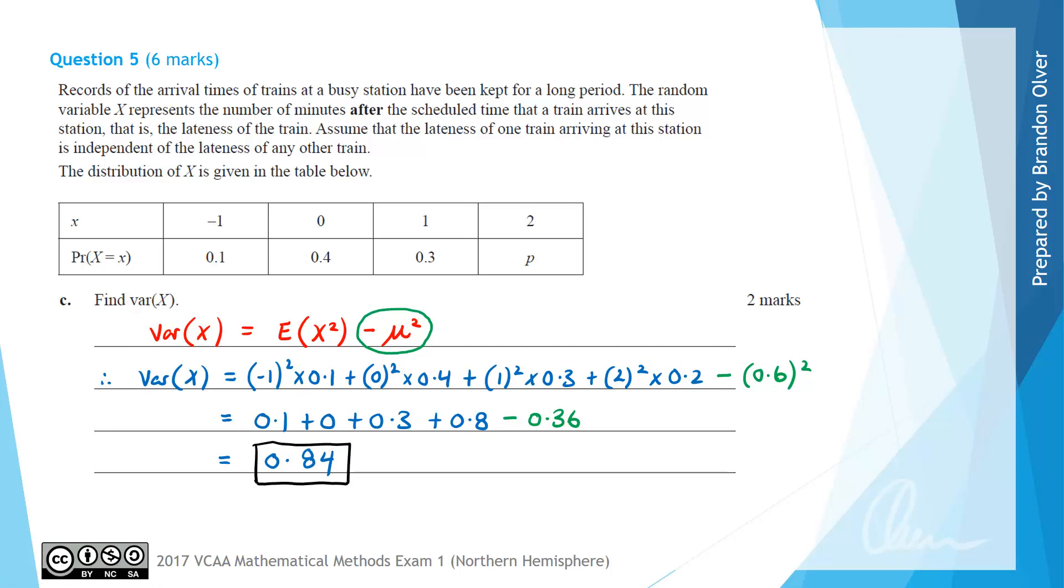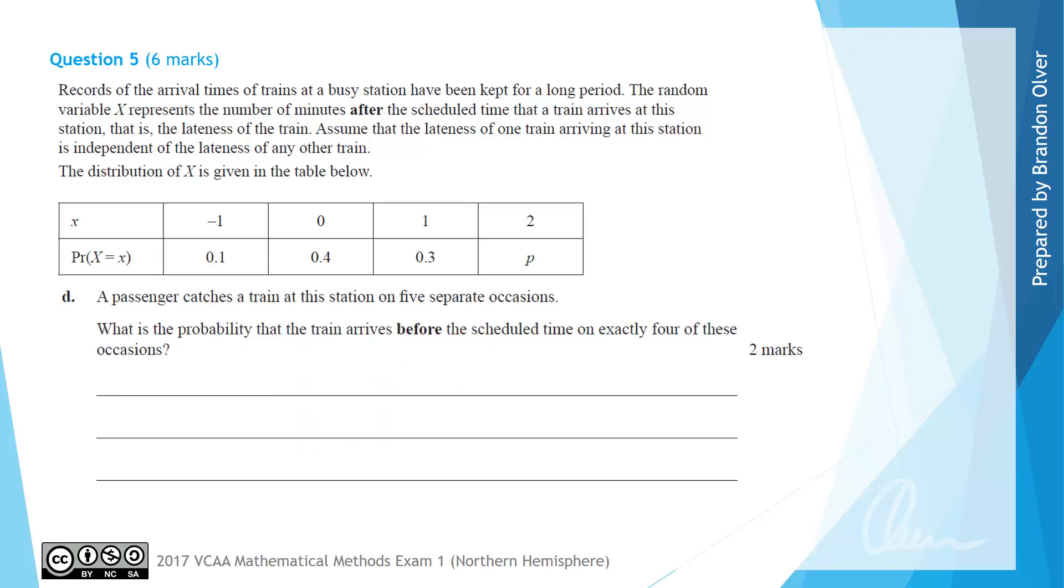For part D we have a passenger catches a train at this station on 5 separate occasions. And we already know that we were treating each occasion as being independent from the instruction in the questions.